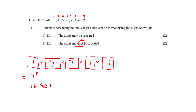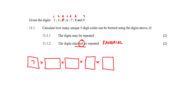Now, 11.1.2: if the digits may not be repeated, we use our blockies again. In the first blockie we can use seven digits — let's say we use five. Then in the second blockie we have six possible digits, in the third five, and so on. It's decreasing one by one: seven, six, five, four, three. And our answer is 2,520.